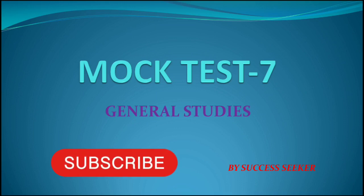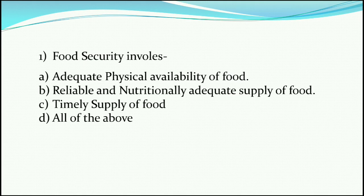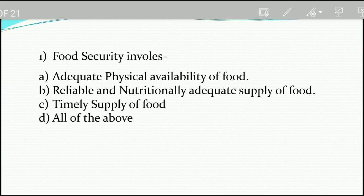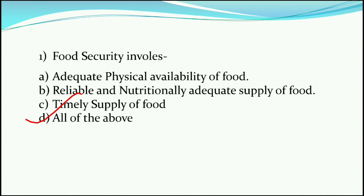Let's start. First question: food security involves — here the answer will be 'all of the above.' All of the options are correct: adequate physical availability of food, reliability and nutritionally adequate supply of food, and timely support of food. So food security involves all of these.